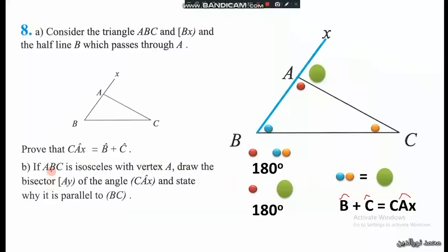Part two says if ABC is an isosceles triangle with vertex A, isosceles means these two sides are equal and these two angles are equal because the vertex is A. Draw the bisector AY of the angle CAX and state why it's parallel to BC.